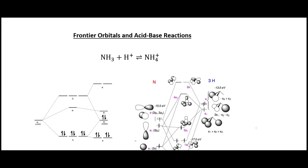In this video I'm going to continue talking about acids and bases, looking at it in terms of frontier orbitals — that is the highest occupied molecular orbital (HOMO) and the lowest unoccupied molecular orbital (LUMO). To start off I will look at this reaction here: ammonia with H⁺ making ammonium.